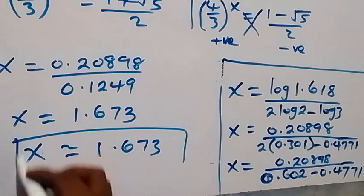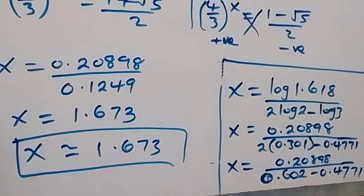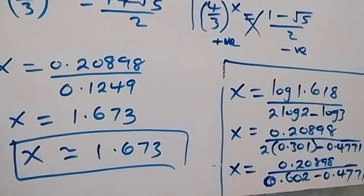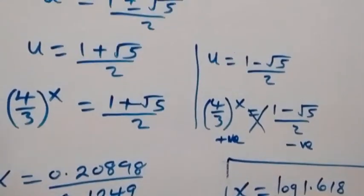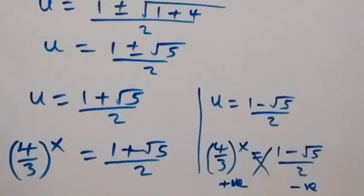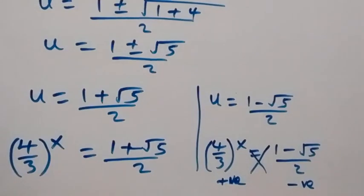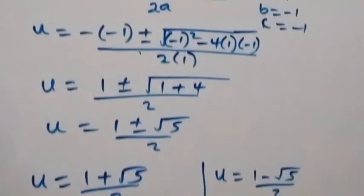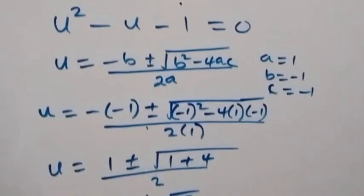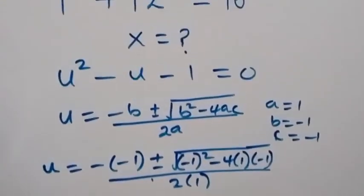So x is approximately equal to 1.673. You can substitute this value back into the original equation to verify it satisfies the problem. Thank you for watching — don't forget to subscribe for more exciting videos, turn on the notification bell, share this video, and leave a comment. See you next class!